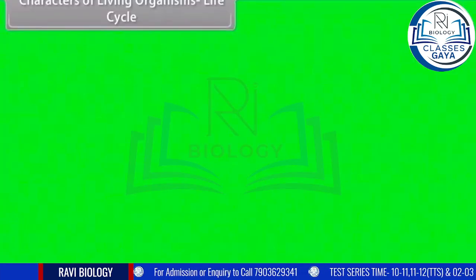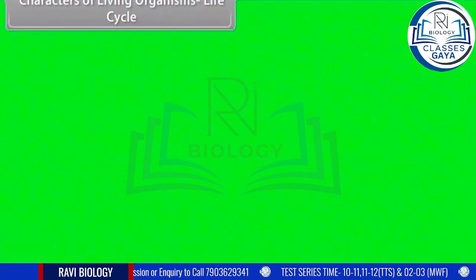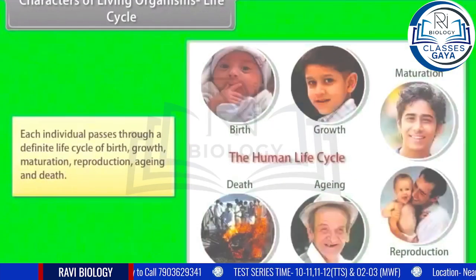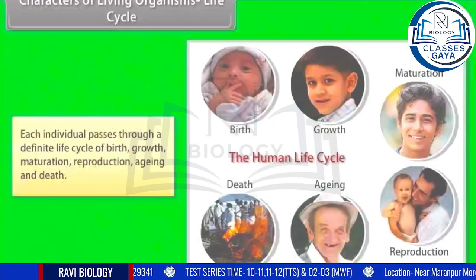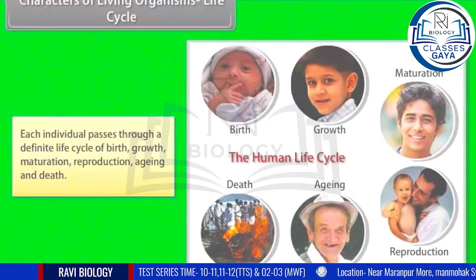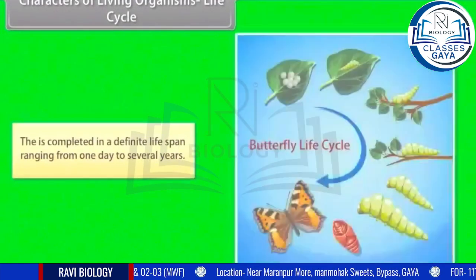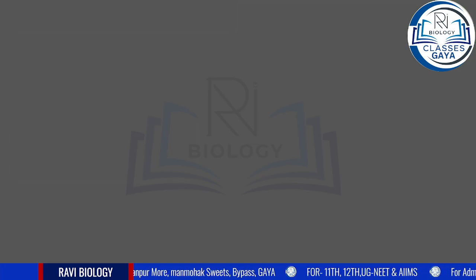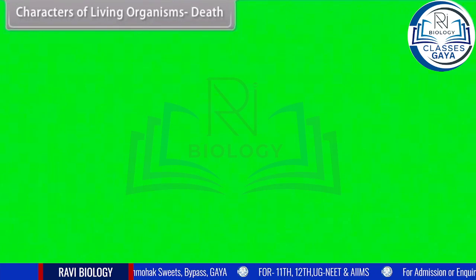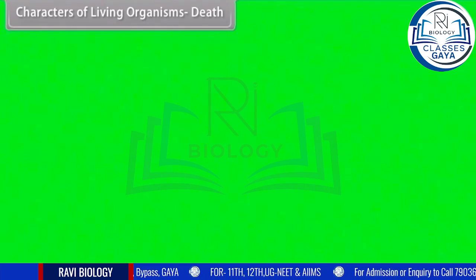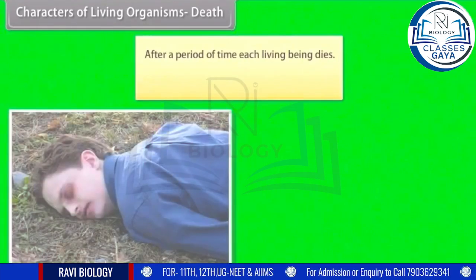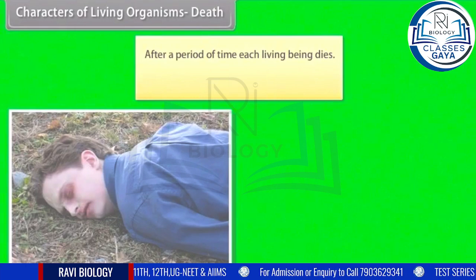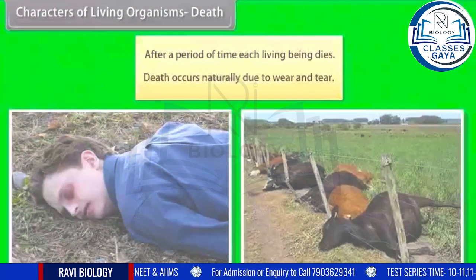Characters of living organisms — Life cycle and Death: each individual passes through a definite life cycle of birth, growth, maturation, reproduction, aging, and death. This is completed in a definite lifespan, ranging from one day to several years. After a period of time, each living being dies. Death occurs naturally due to wear and tear.